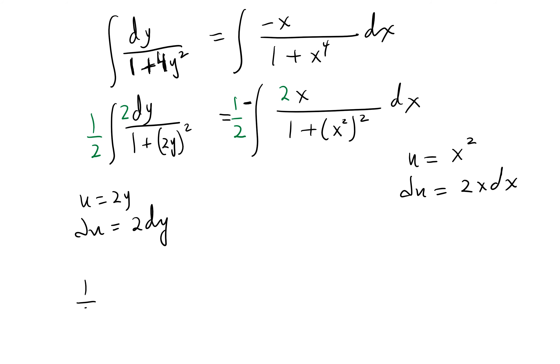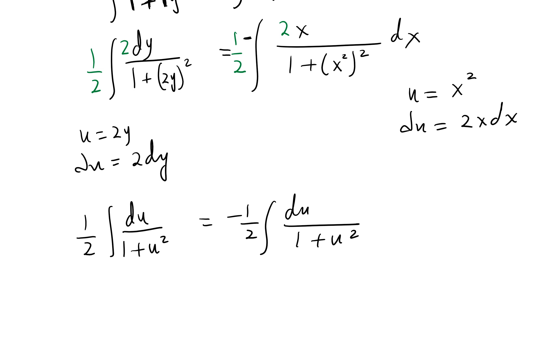So the 1 half comes out, du over 1 plus u squared, negative 1 half, du over 1 plus u squared. The u on the right side is different than the u on the left side. These cancel out the 1 halves. You get tan inverse of u here, which is 2y, equals negative tan inverse of the u, which is x squared. And don't forget the plus c.